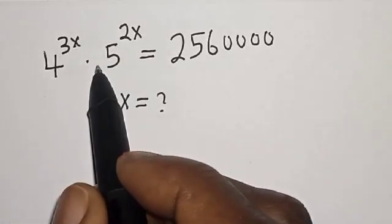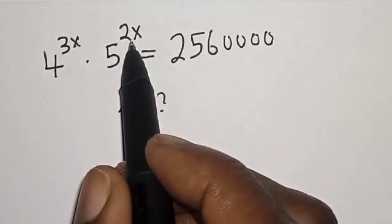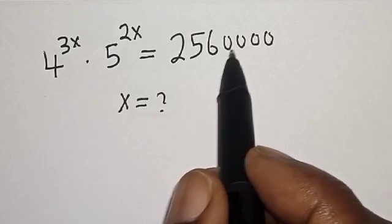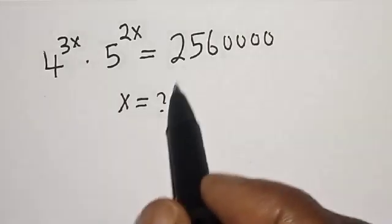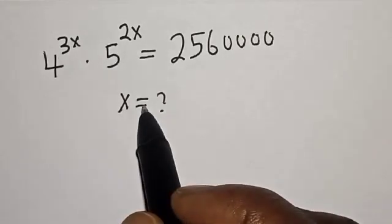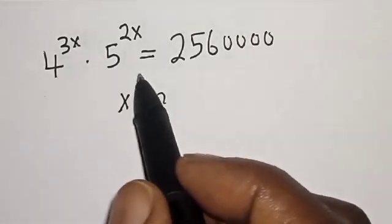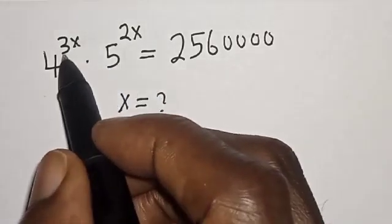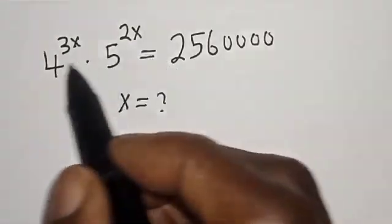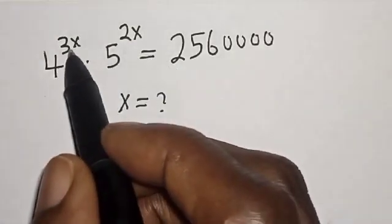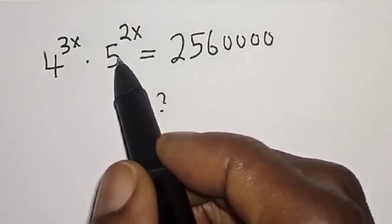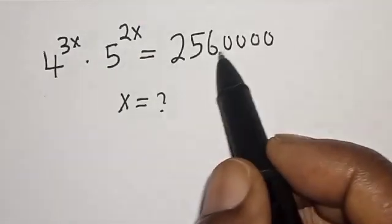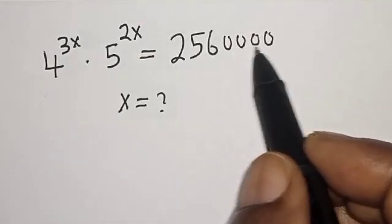4 raised to power 3s multiplied by 5 raised to power 2s is equal to 2,560,000. What is the value of S? Everyone, welcome to my class. In this class, we want to find the value of S from this equation: 4 raised to power 3x multiplied by 5 raised to power 2s is equal to 2,560,000.